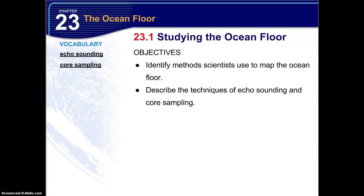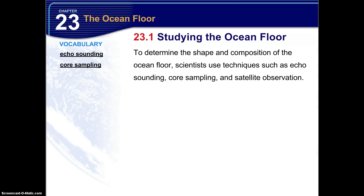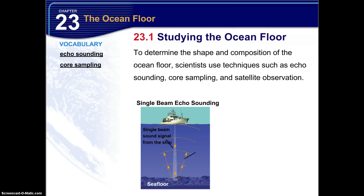To determine the shape and composition of the ocean floor, scientists use techniques such as echo sounding, core sampling, and satellite observation. The first type is single beam echo sounding. This is exactly what it says — a single beam sound signal comes from the vessel, echoes off of the ocean floor, and then returns back to the ship.